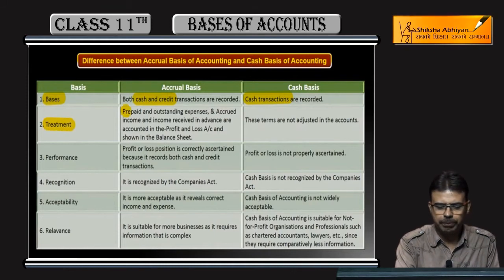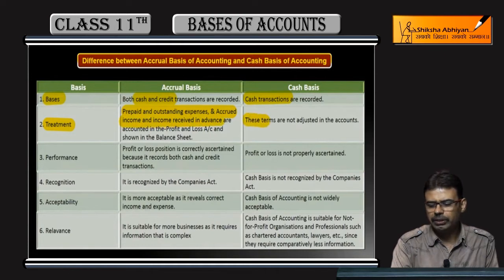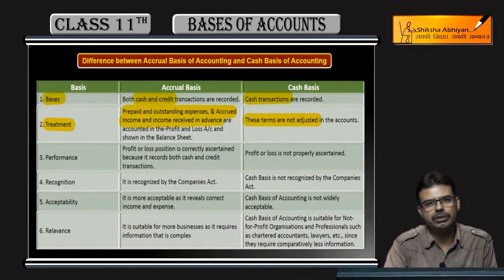Under accrual accounting, items such as prepaid, outstanding, accrued, or income received in advance are adjusted. But under cash basis, these items are not adjusted.